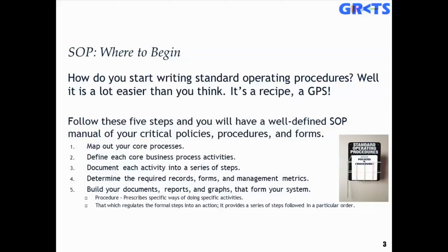Follow these five steps and you'll have a well-defined SOP manual of your critical policies, procedures, and forms. Most manufacturers do indeed have a quality index — a quality manual identifying all of your SOPs, work instructions, and other compliance records. Therefore, it is very important that you map out your core processes, define each core business process and its activities, document each activity into a series of steps, determine the required records, forms, and management metrics, and build your documents. This is part of the construction phase — how you compile information, reports, and graphs that form the foundation of your system.